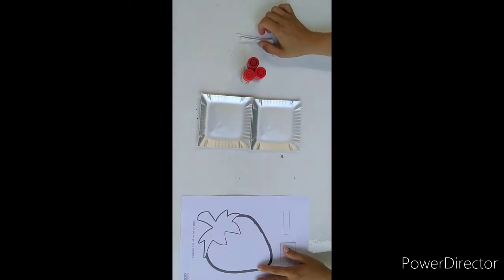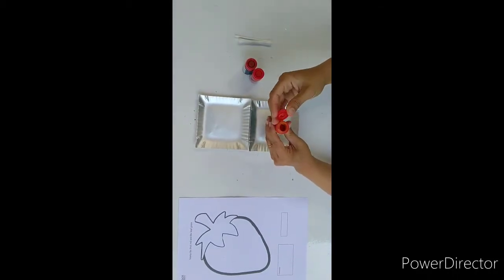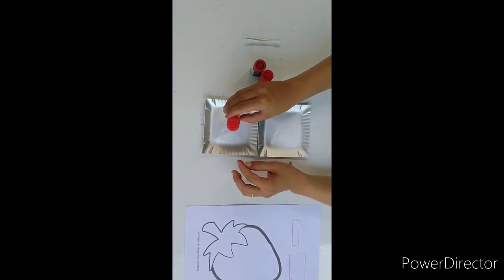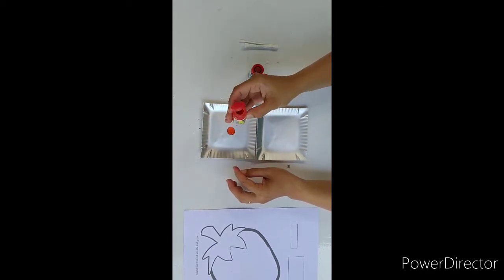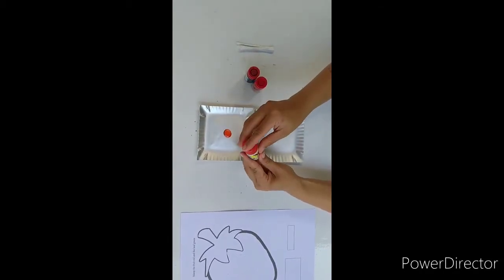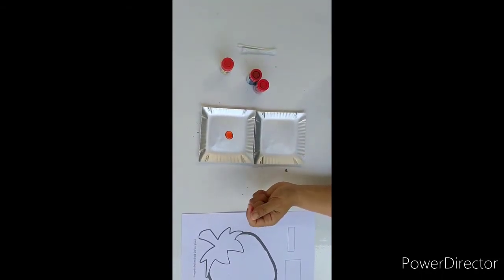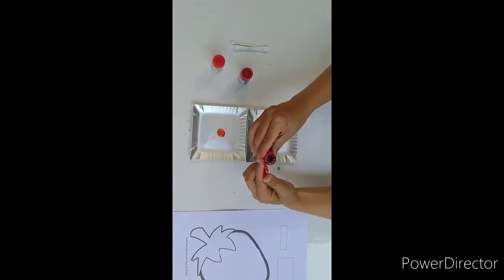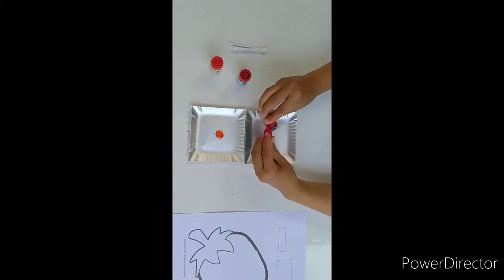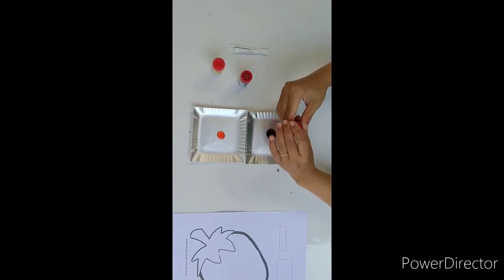And first, we need to pour the color into your plate, or paper plate. The first one is yellow color. And then, we need the second one, red color. We put the red color in different place. All right.